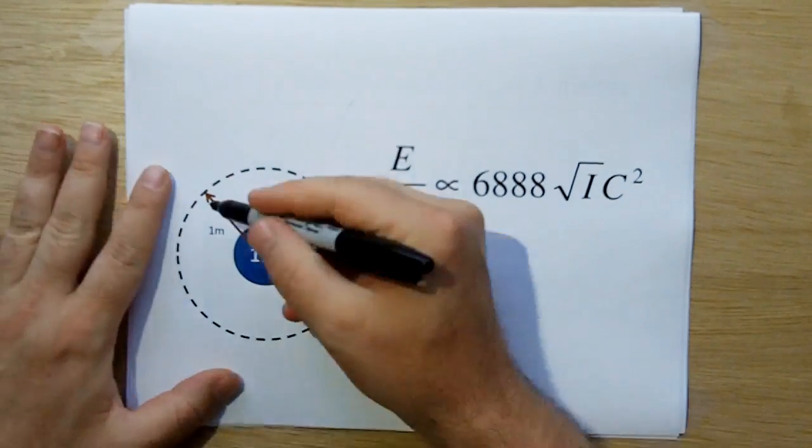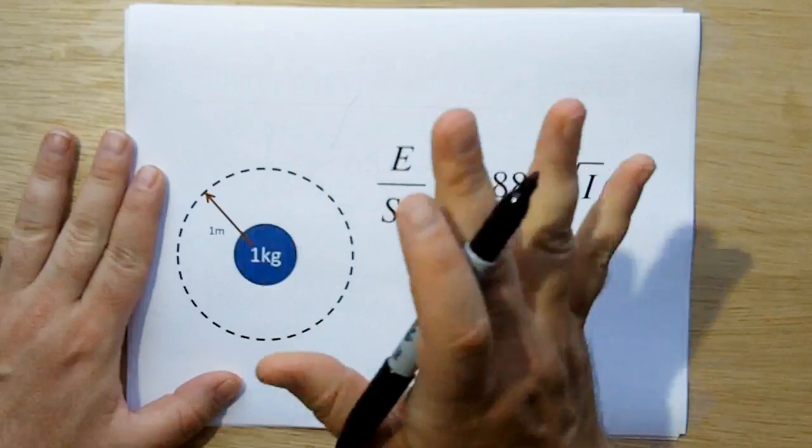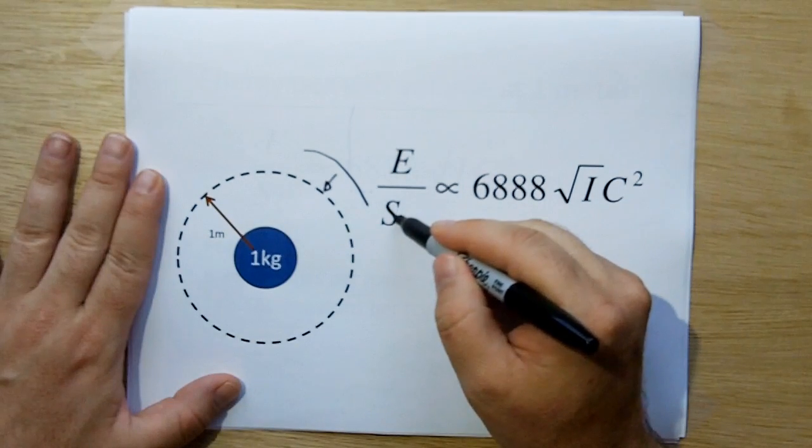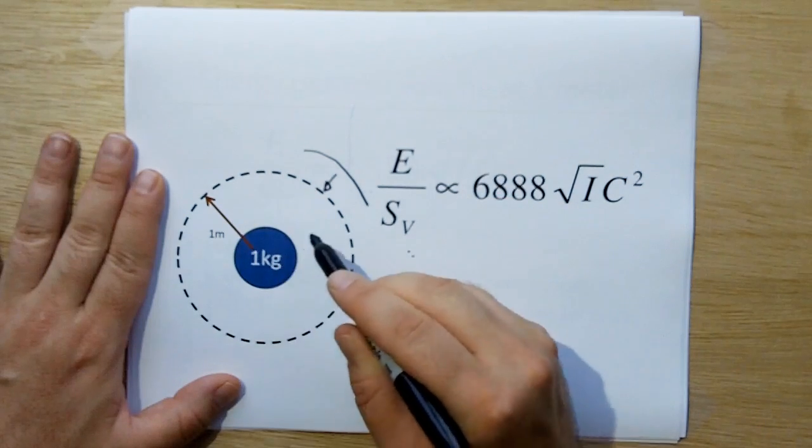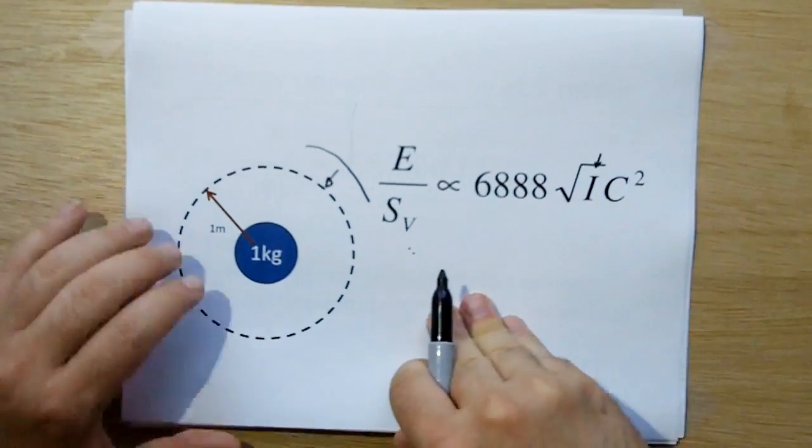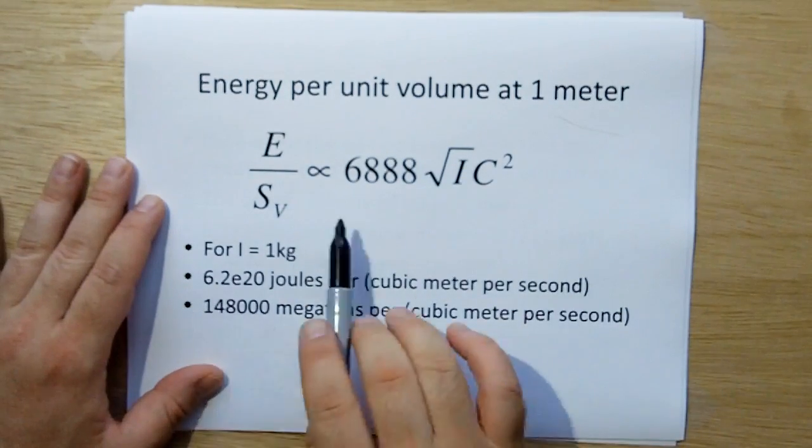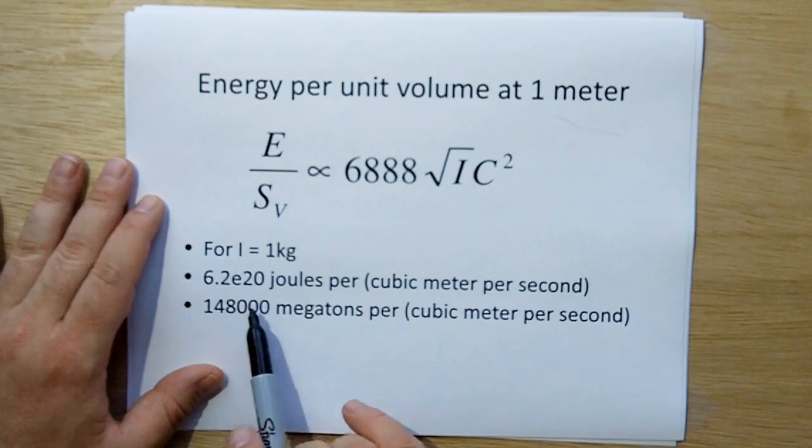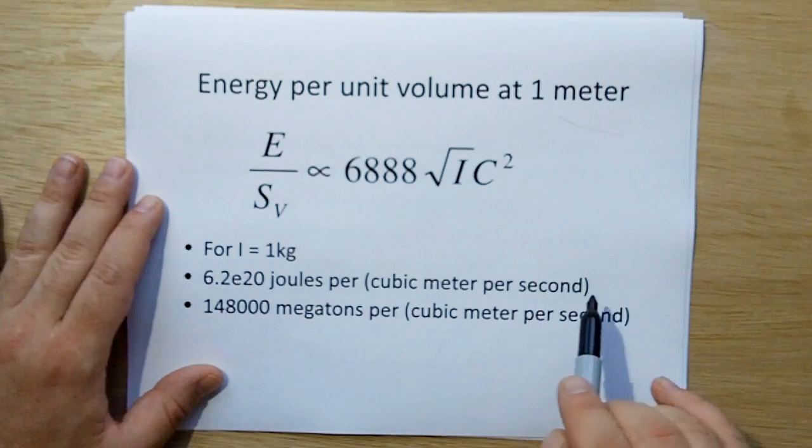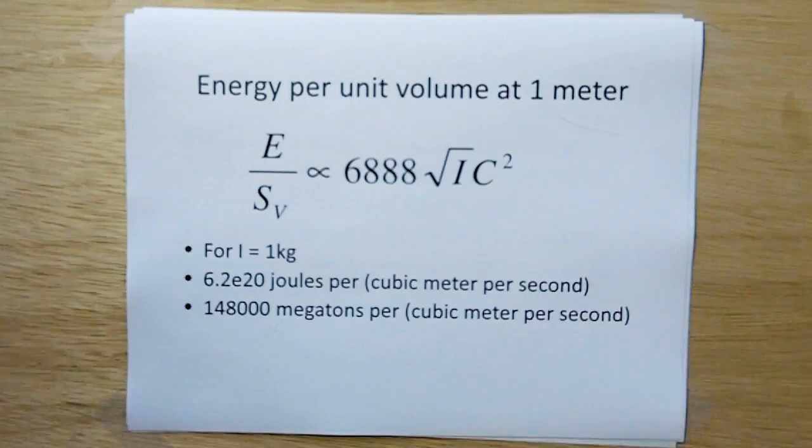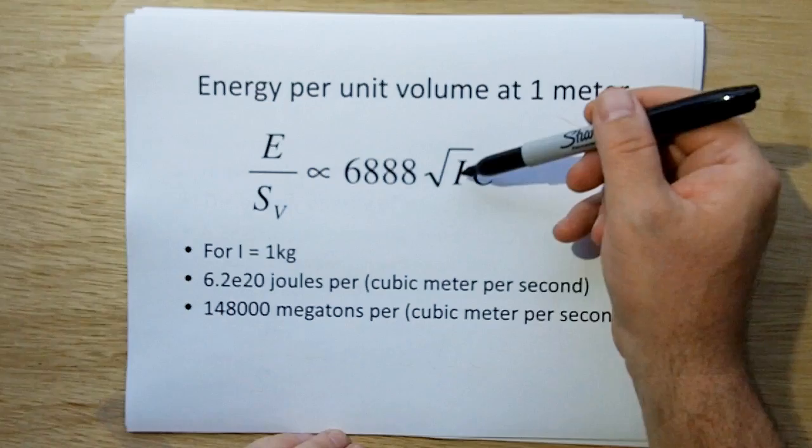And again, let me explain this. This is at one meter distance from the object. Remember, we're doing this over a unit sphere. This is the volume rate of ether in cubic meters per second needed to sustain the energy of one kilogram of matter. Which actually we're going to put the one kilogram in here. And when we do that, we put the one kilogram in for I. We come up with E over SV is equal to 6.2 E to the 20 joules per cubic meter of ether per second. Which in megatons is 148,000 megatons per cubic meter per second of energy entering a one meter sphere for a one kilogram inertia to sustain a one kilogram inertia.